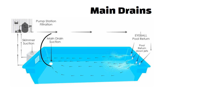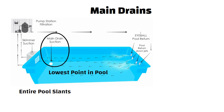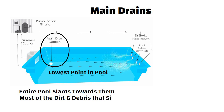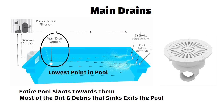Main drains are usually located at the lowest point in the pool, so the entire pool surface slants towards them. Most of the dirt and debris that sinks exits the pool through these drains. These drains are covered with grids.